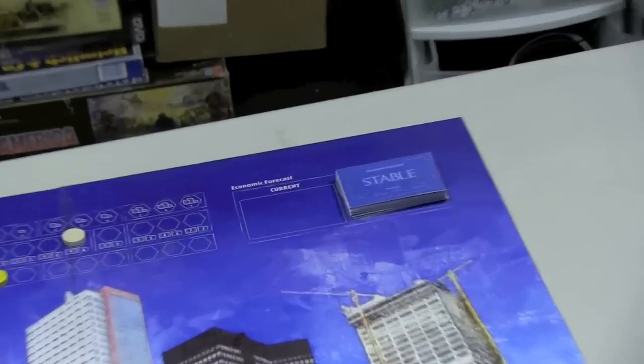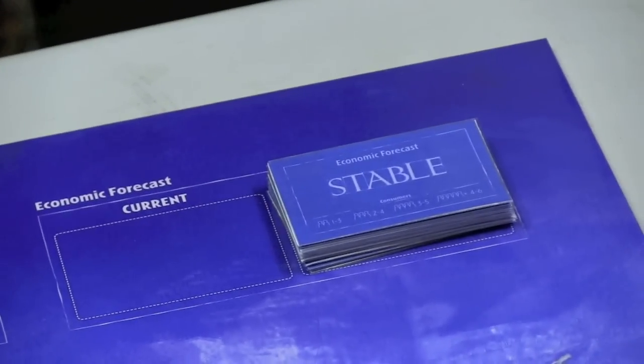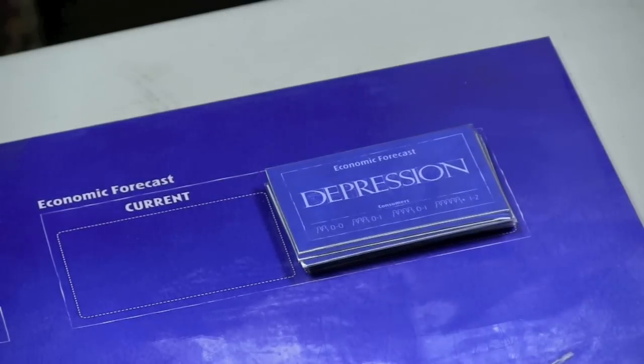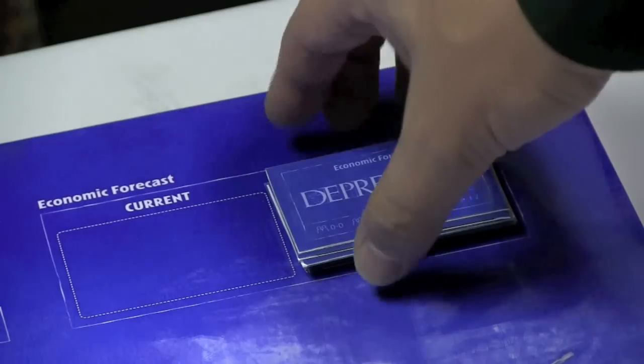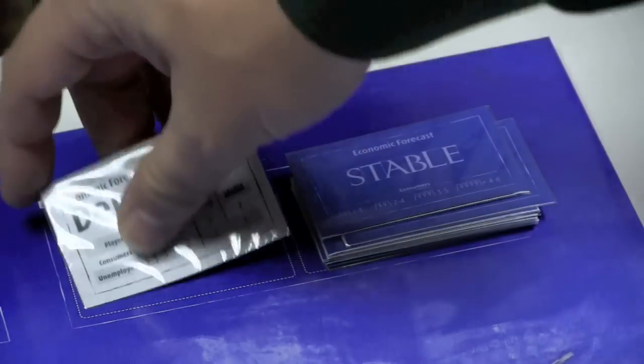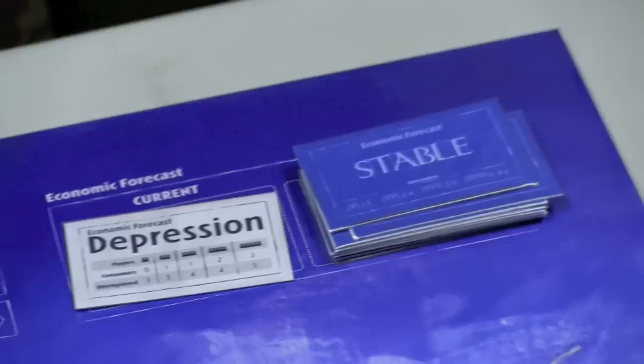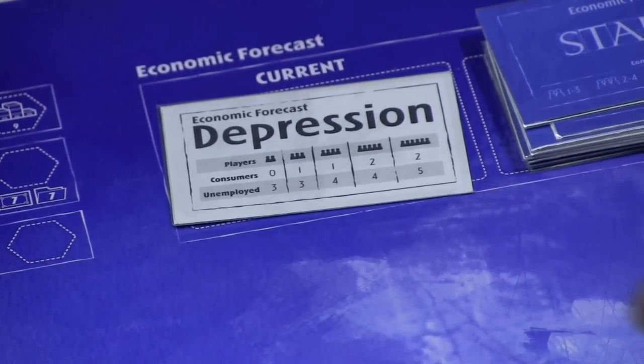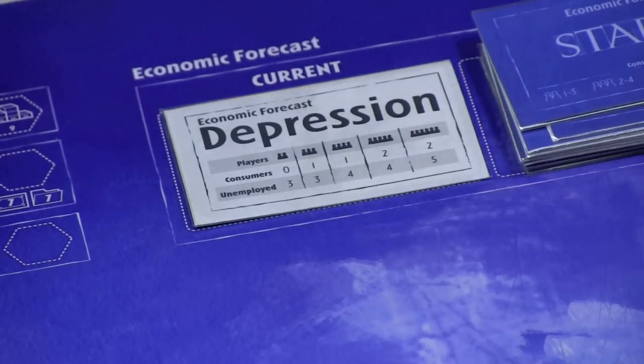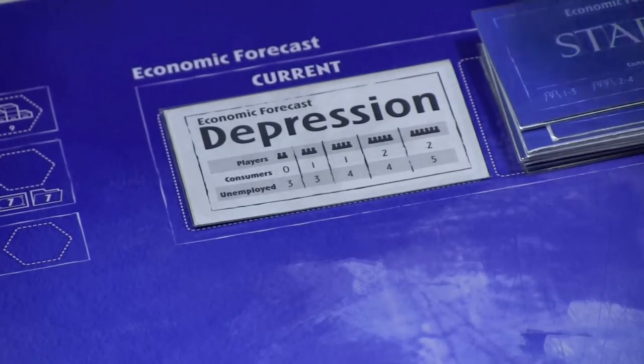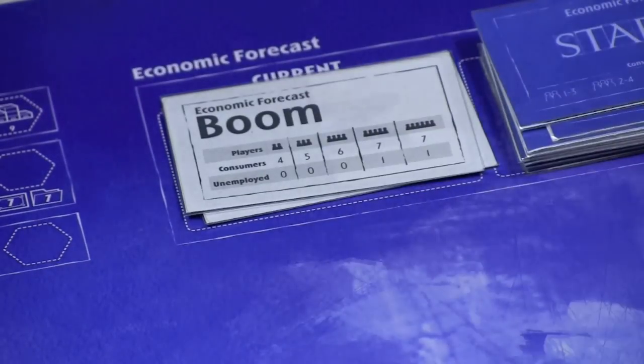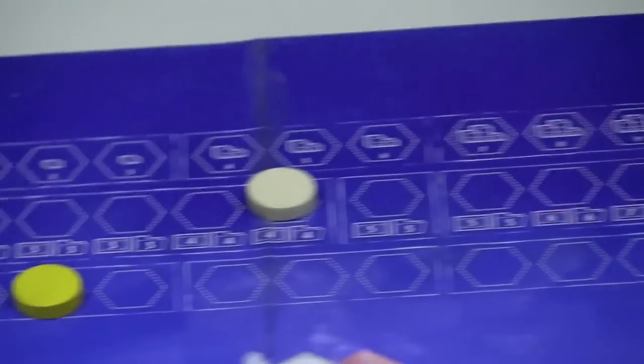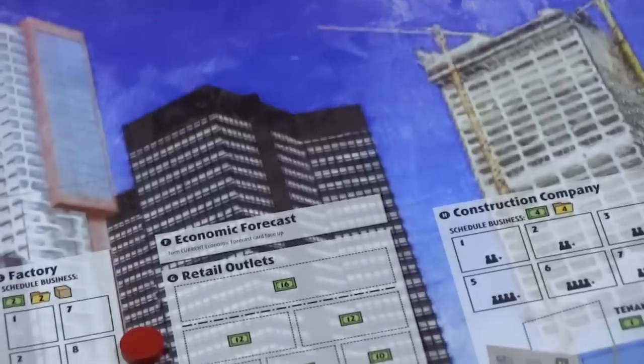At the very top here, you can see we have a pile of cards. And the economic forecast can be stable, a recession, an economic boom, or a depression. Each of these, you'll see what's coming, but you don't know the exact numbers on it until you turn it over each turn. And then you'll see, depending on how many players are in the game, so in this game, let's say there's a five-player game, two people are going to buy during a depression, but four of them are unemployed. While during a boom in a five-player game, seven people are going to buy, and only one's going to be unemployed. Unemployed can be handy, because they'll go over here to the job market, bringing down the price to hire new employees.